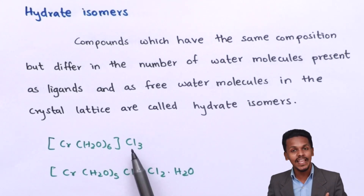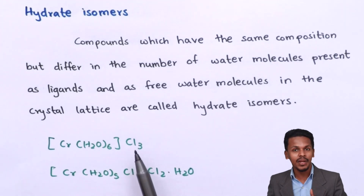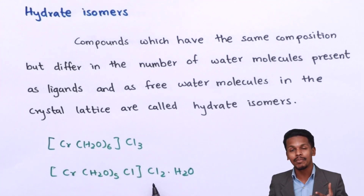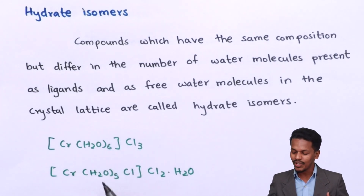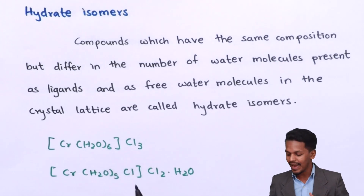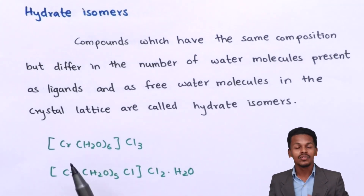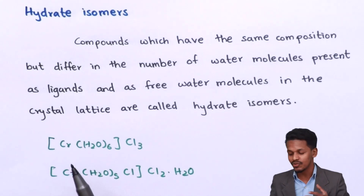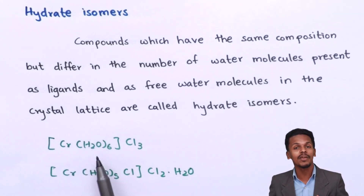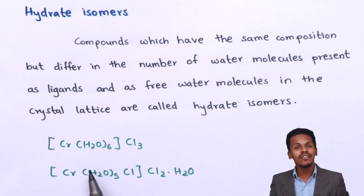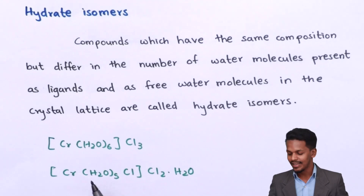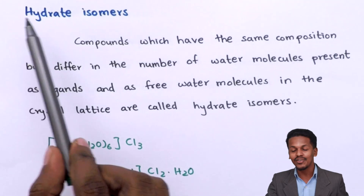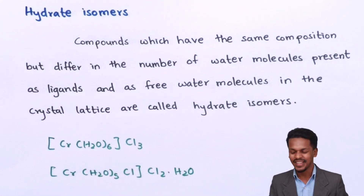In the first complex, three Cl atoms are in the primary sphere; in the second, two Cl atoms are in the primary sphere. They ionize differently. The key difference is the number of water molecules present as ligands: six in the first case and five in the second. Therefore these two are hydrate isomers of each other.